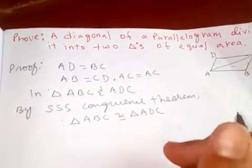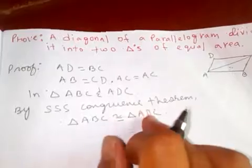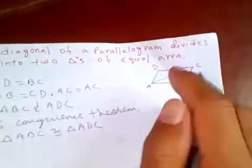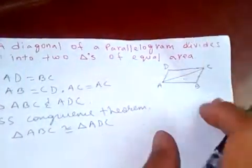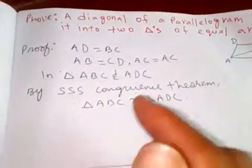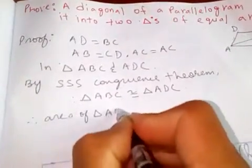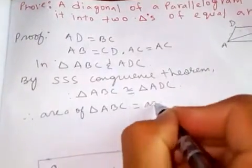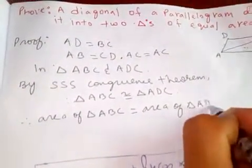So if these two triangles are equal, their area must be the same. Therefore, area of triangle ABC equals area of triangle ADC.